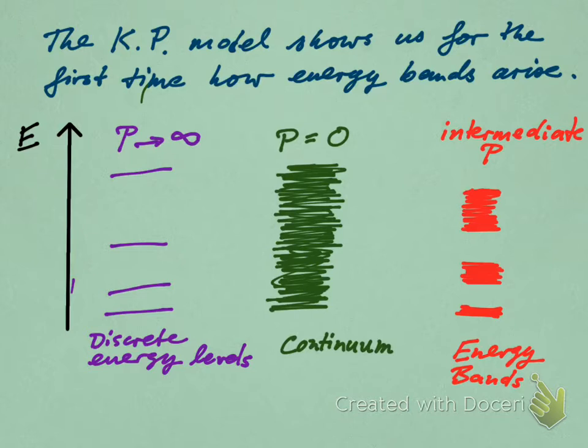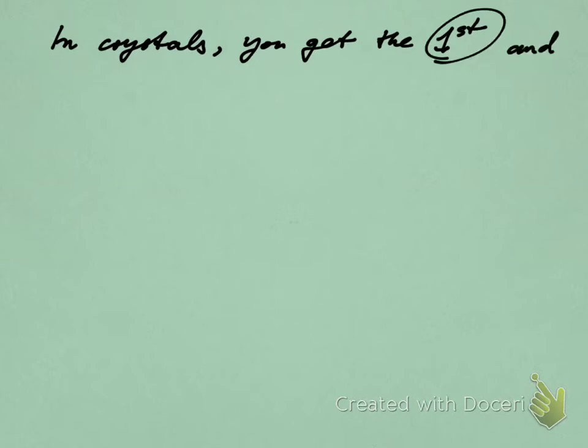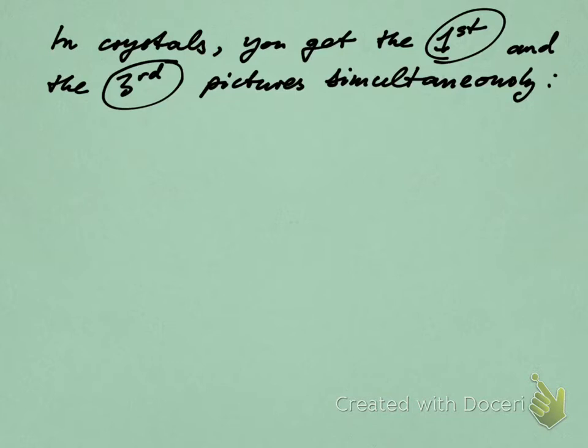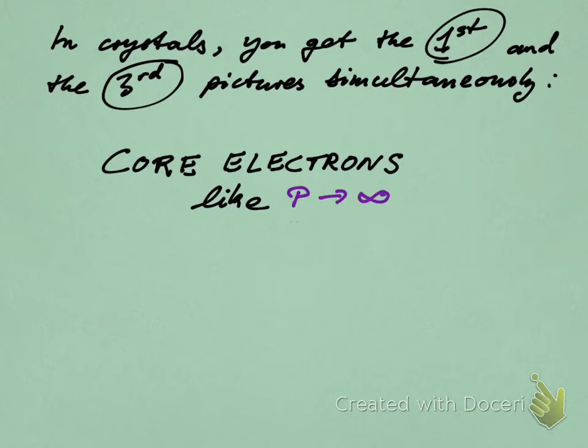And now the most interesting case: an intermediate barrier strength P, where we get energy bands. So it's sort of a mixture of continuous bands and energy gaps between them. In crystals, you get the first and third picture simultaneously because we have these core electrons that are stuck to the ions and cannot travel freely. That's sort of like P going to infinity. Those inner electrons will be stuck to their particular ion and will always stay with that ion or in the vicinity of that ion.